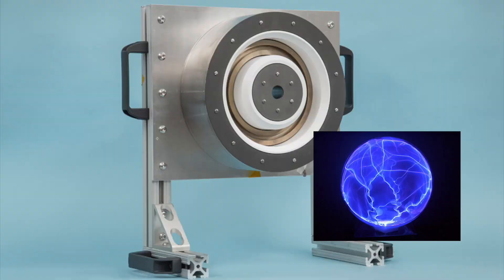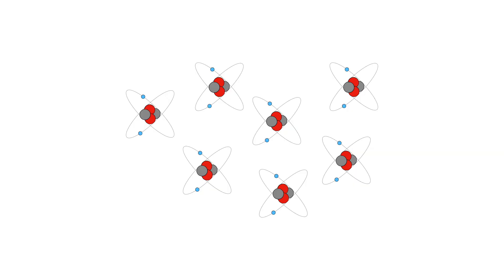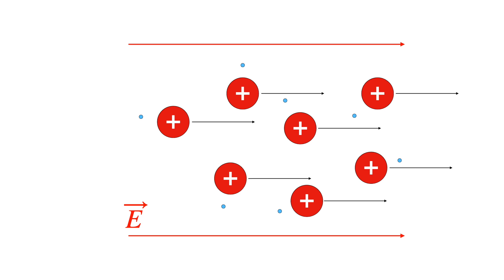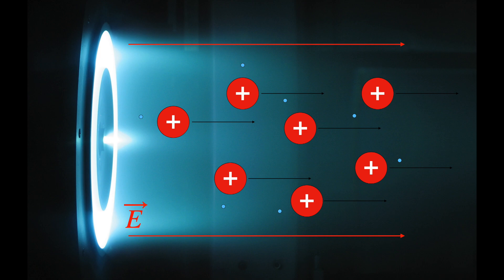Our thrusters fire a plasma. This is a stream of atoms with an electron knocked off of them to create a soup of positive ions and electrons. We use an electric field to accelerate the ions to 60,000 miles per hour, generating thrust very efficiently.